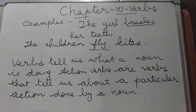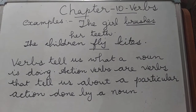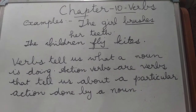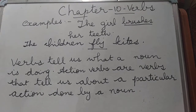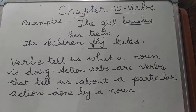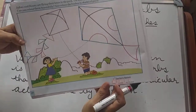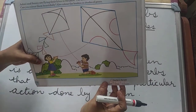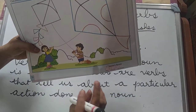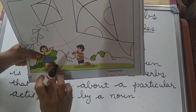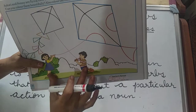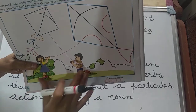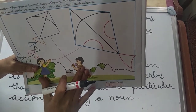Let us look at these examples. First example: the girl brushes her teeth. What is this girl doing? She brushes her teeth. And also, look at this picture. In this picture, you can see these children fly kites. What are these children doing? They are flying kites.